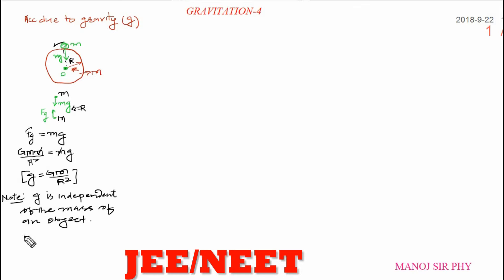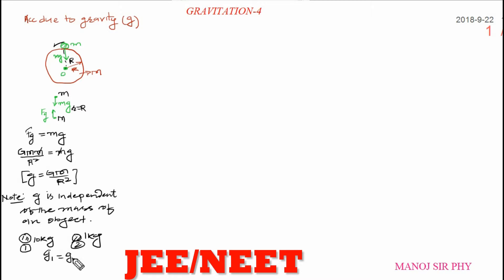This means it won't matter — an iron ball of 10 kg and a plastic ball of 1 kg falling from a certain height will both have the same acceleration due to gravity. Both bodies have the same g. Remember this fact: acceleration due to gravity is independent of the mass of the object.